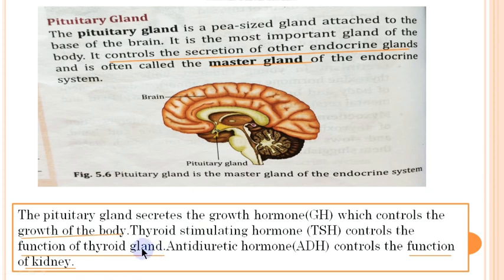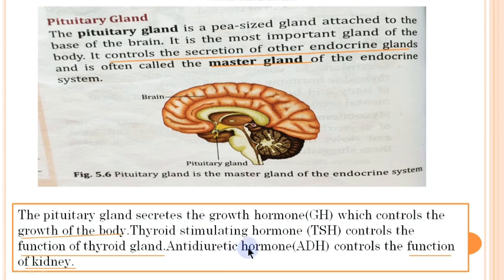Next is antidiuretic hormone, known as ADH, which controls the function of the kidney. Diuresis means release of more urine; antidiuresis means release of less urine. This hormone absorbs water from the nephric tube of the kidney so that urine becomes concentrated.